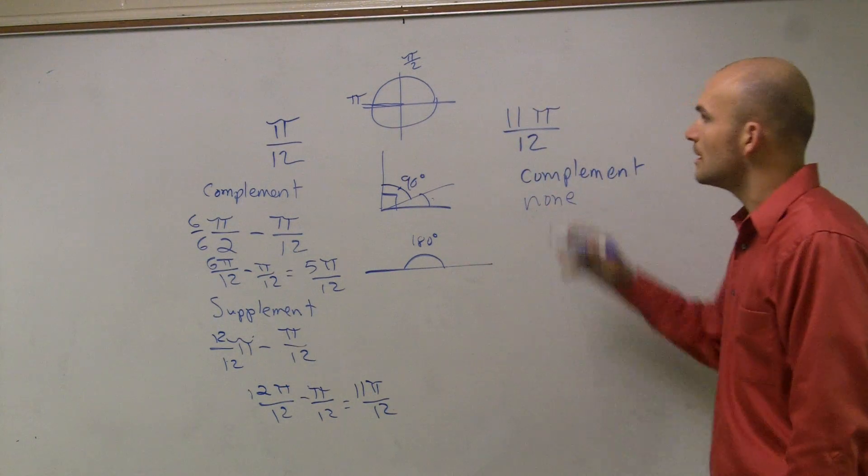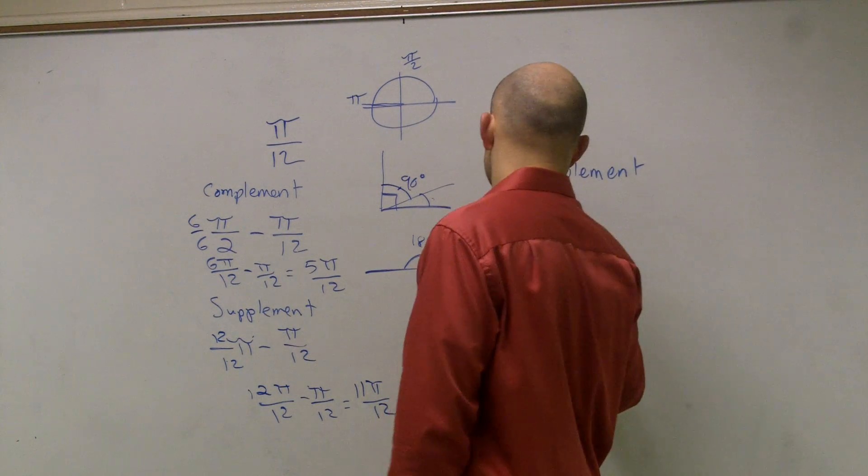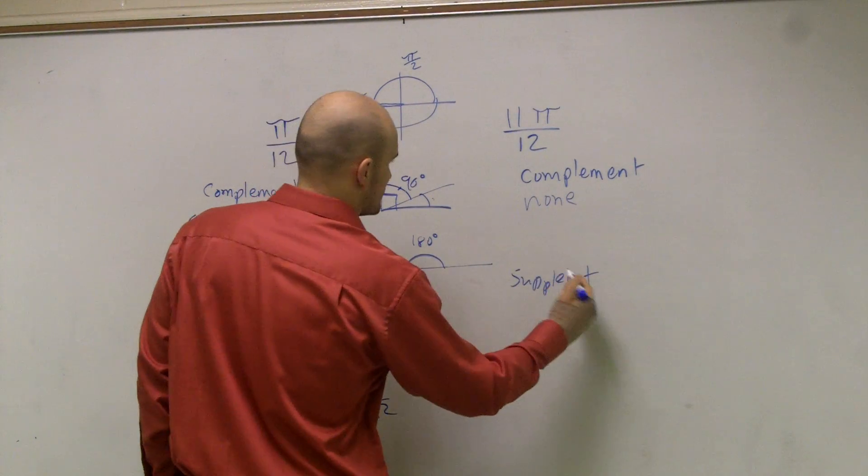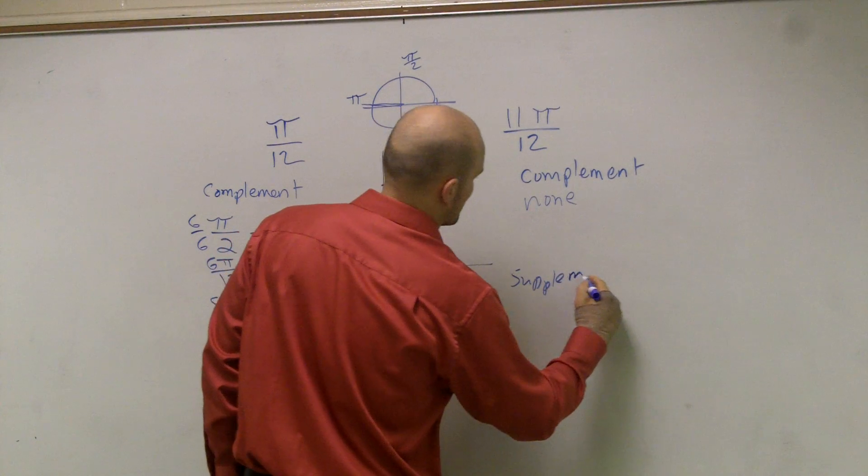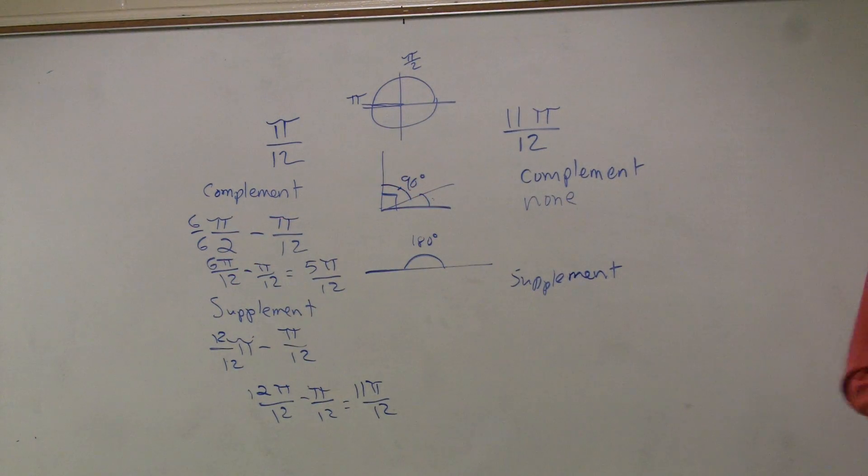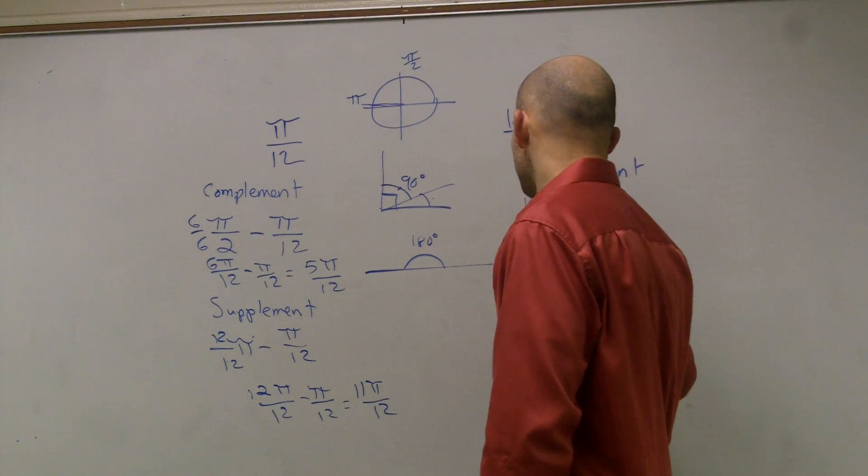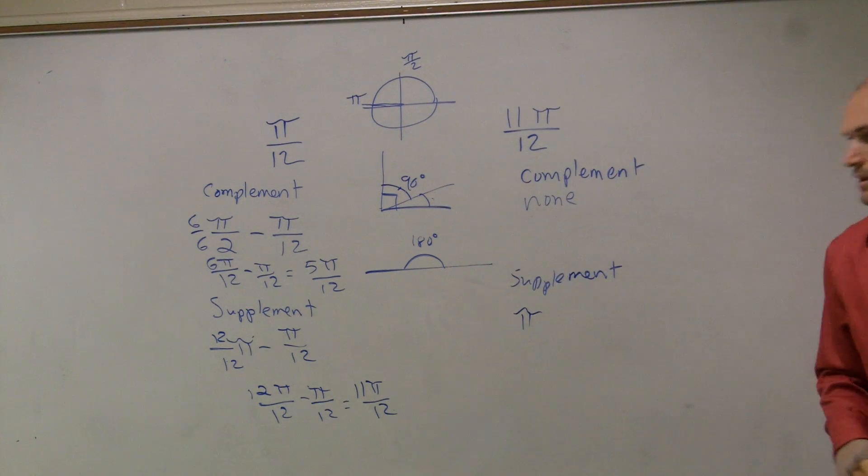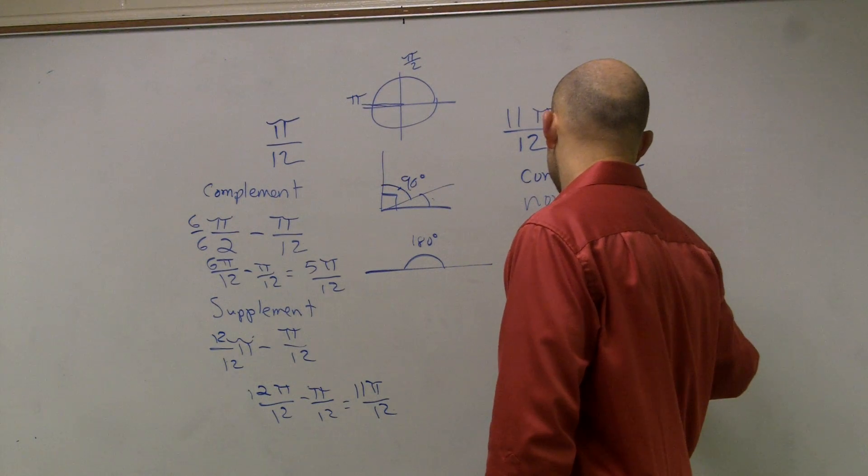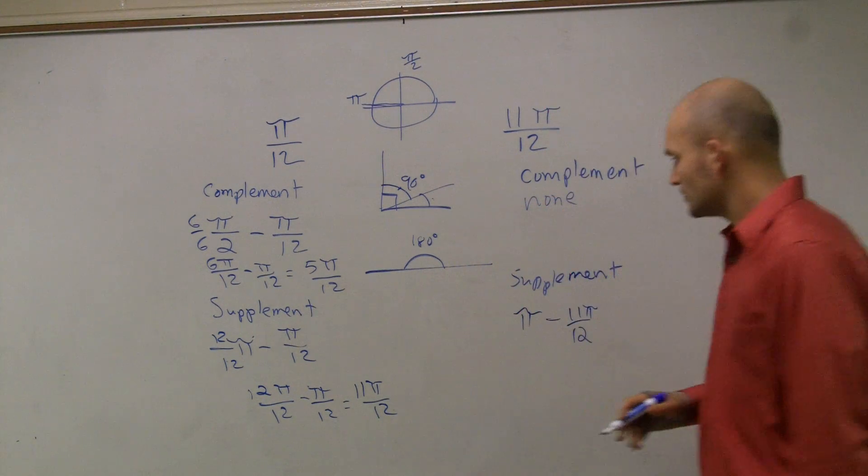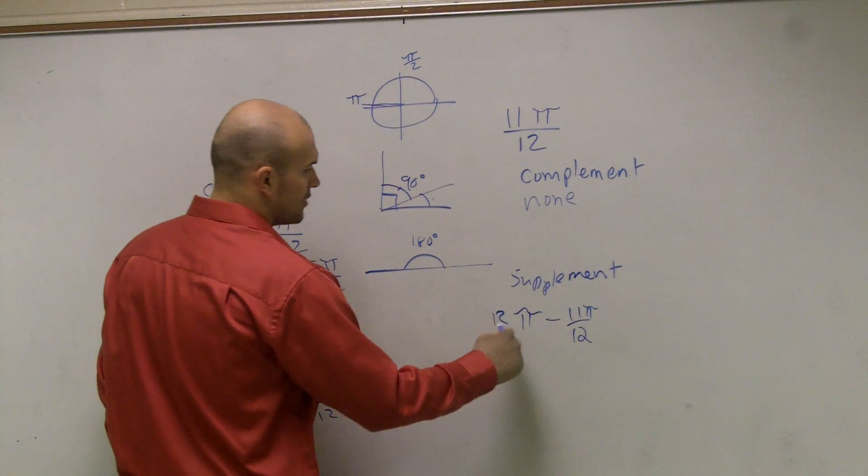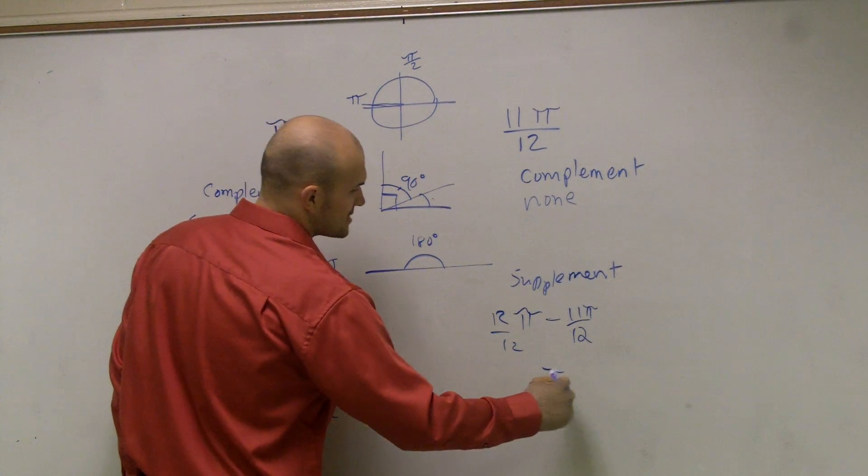So this one's none. And then, to find the supplement, to find the supplement, you take 180 degrees, which in radians is what we call π, and you subtract your angle. And again, we have to multiply, since these don't have the same denominator, multiply by 12 over 12, and what you get is π over 12.